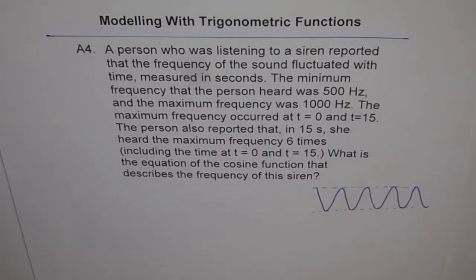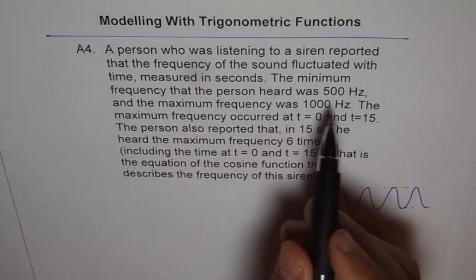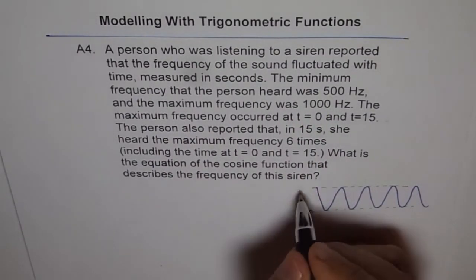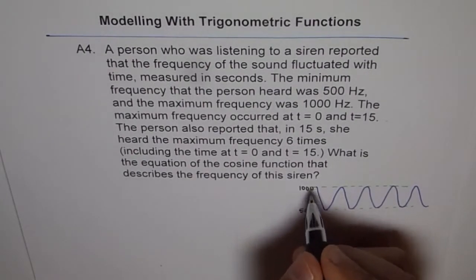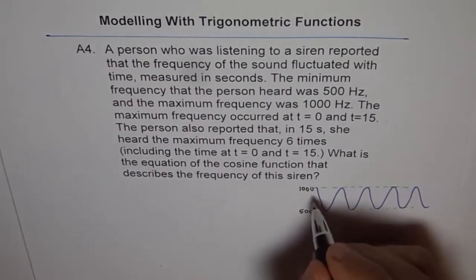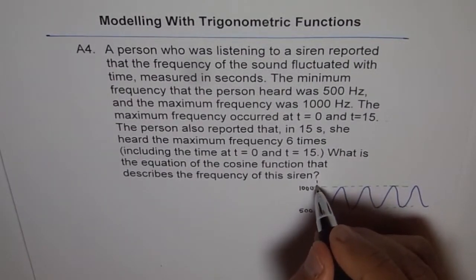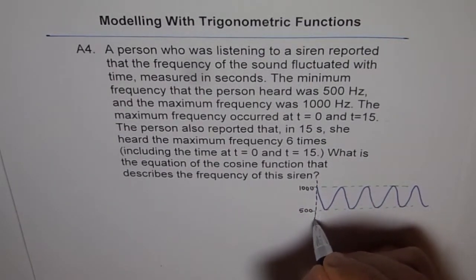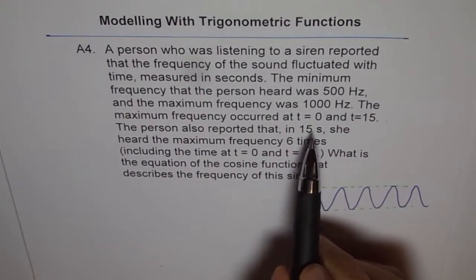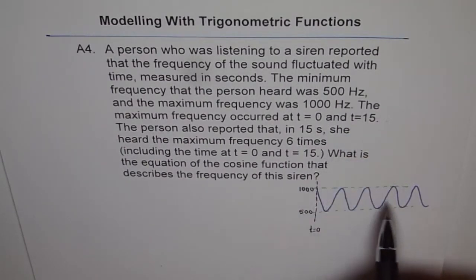We say the minimum frequency that a person has is 500, let's say this is 500 for us and the maximum is 1000. The maximum frequency occurred at t equals 0, so let's say this is our t equals 0. So here we have t equals 0 and t equals 15, so also at t equals 15.